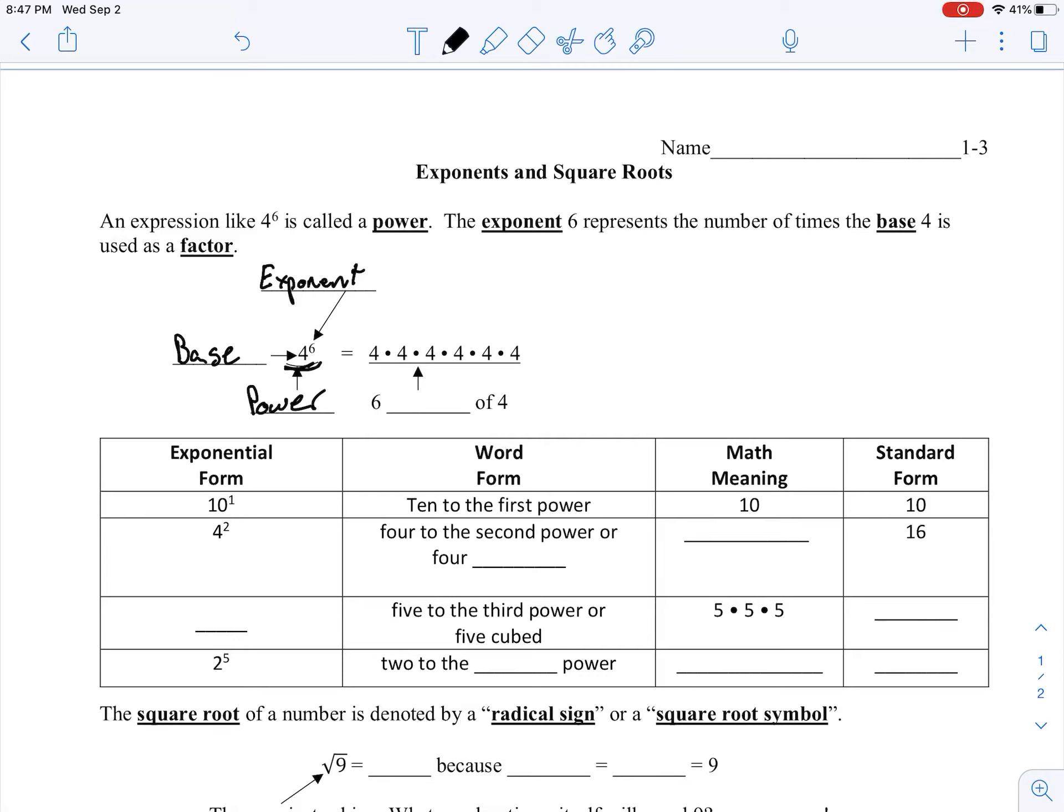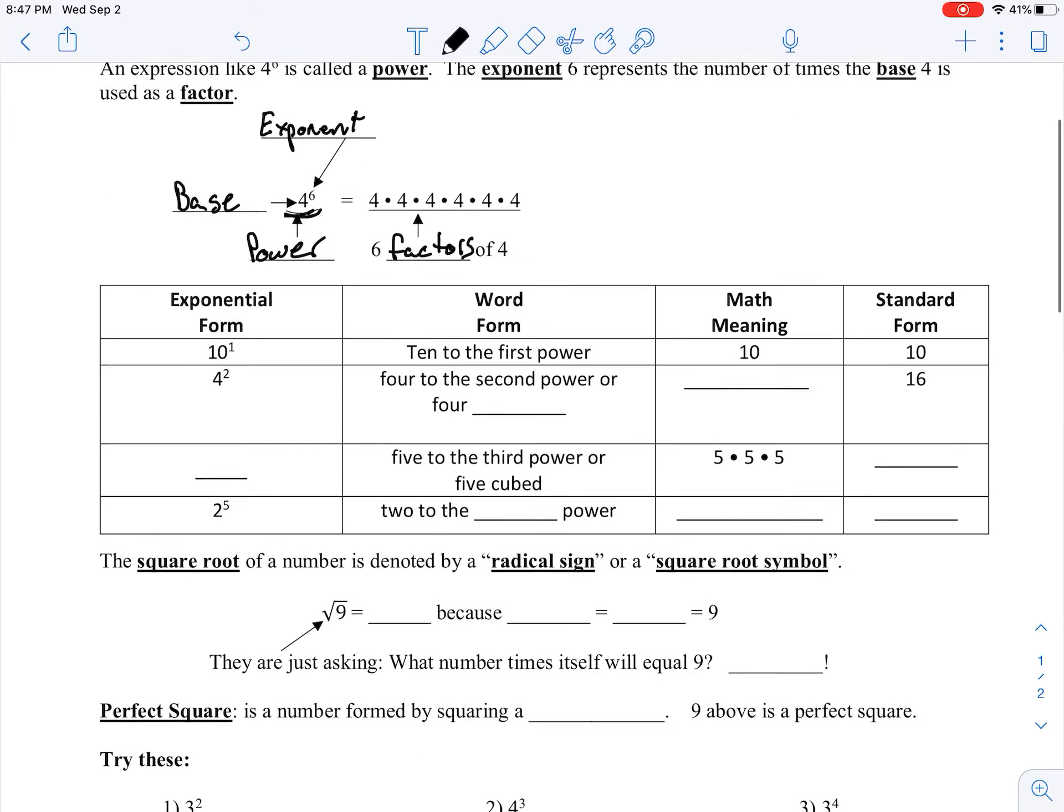How many times we take the number base of 4 and use it as a factor, or how many times we multiply it together, because factors are just numbers that we multiply together to get new numbers. So in this case, 4 to the 6th is telling us we have 6 factors of 4.